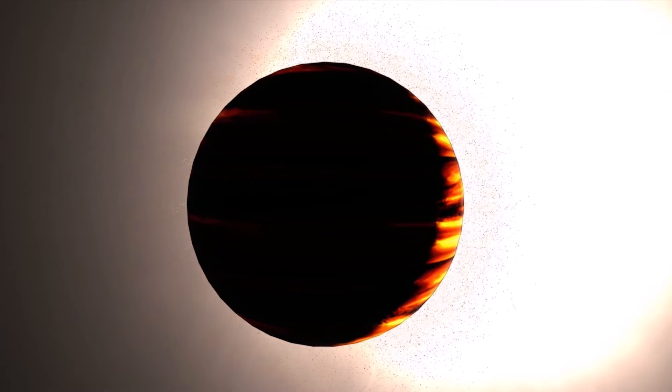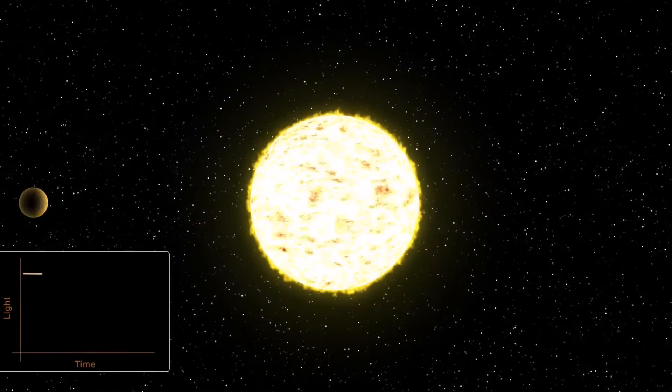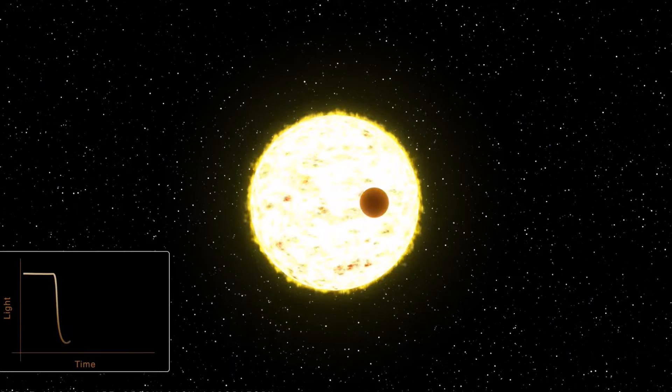But why? This sizzling giant orbits too close to its yellow dwarf parent star, which is extremely hot in itself.